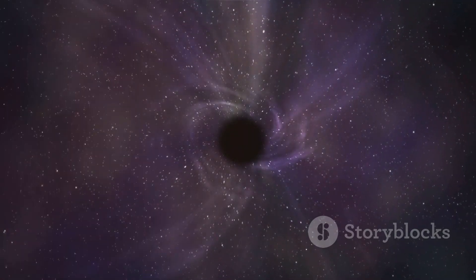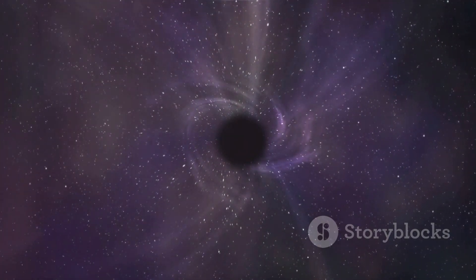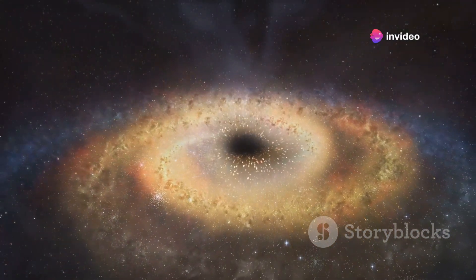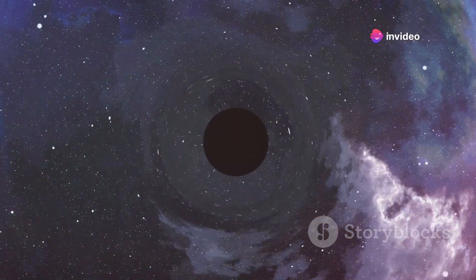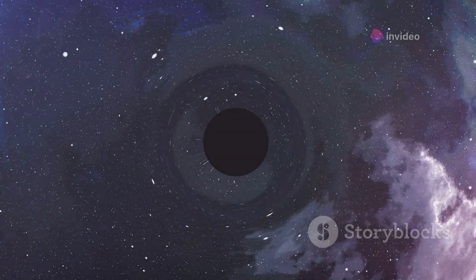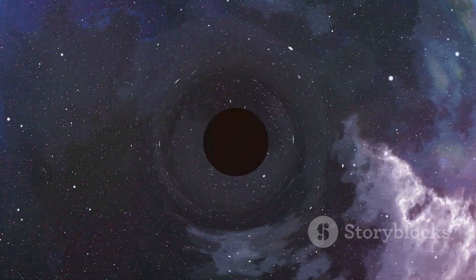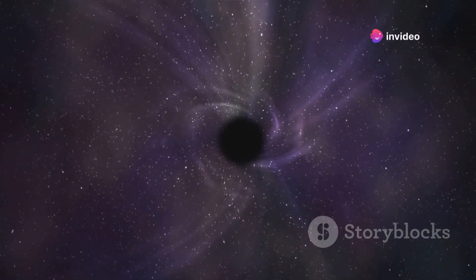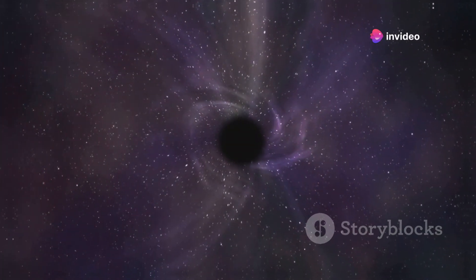Black holes come in different sizes. Stellar black holes are formed when massive stars collapse at the end of their lives. Supermassive black holes, millions or billions of times the mass of our sun, reside at the centers of galaxies. Despite their name, black holes aren't empty spaces. They are incredibly dense objects with a tremendous amount of mass concentrated in a tiny area. This extreme density gives them their extraordinary gravitational pull.